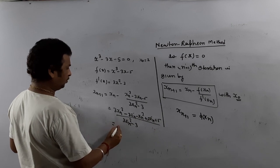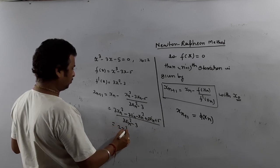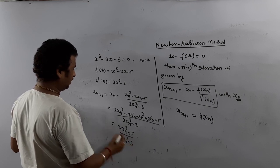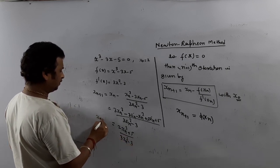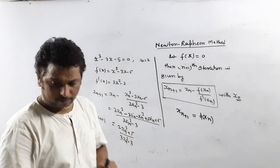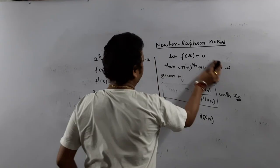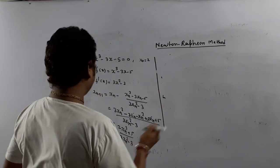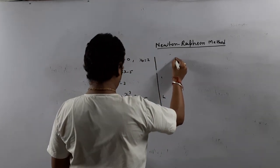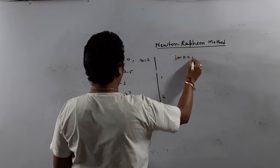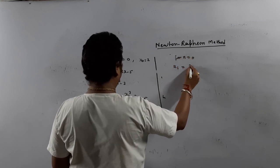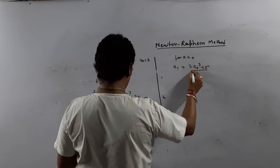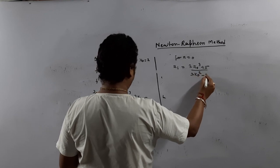x_n minus (x_n³ minus 3x_n minus 5) upon (3x_n² minus 3). This gives us x_{n+1} equals 2x_n³ plus 5 upon 3x_n² minus 3. What is x_1?